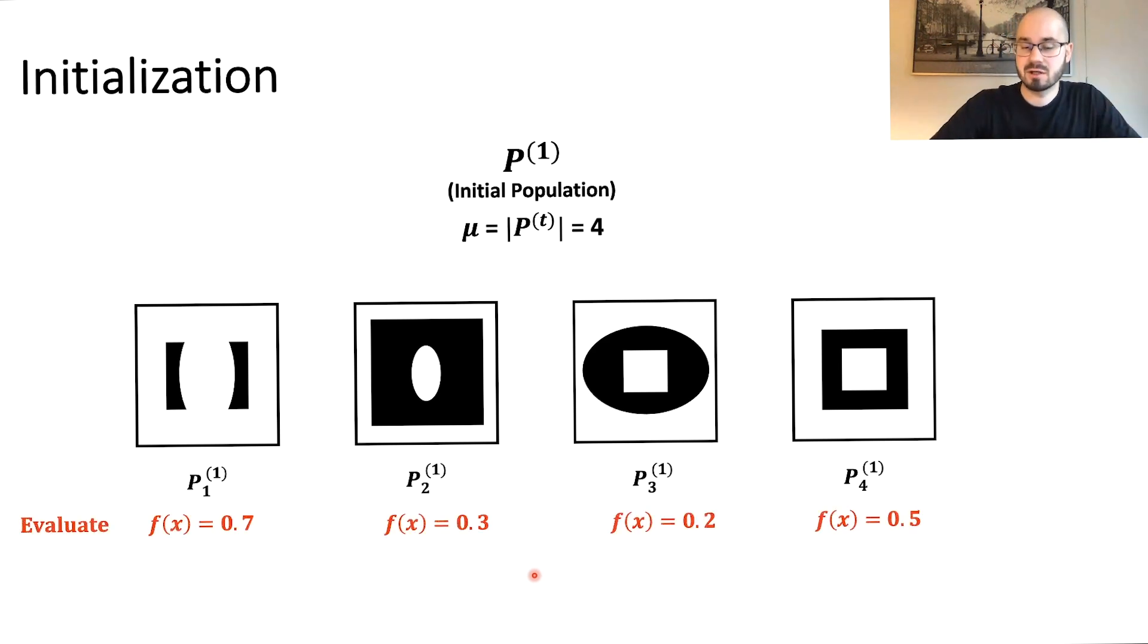Then these individuals are evaluated, calling the f of x function. In our case, we just simply count the black and the white pixels and see how close they are to 0.5, which creates here our error function. The optimum in this case for our problem is 0.0, which means we exactly have 50 percent white and 50 percent black pixels.